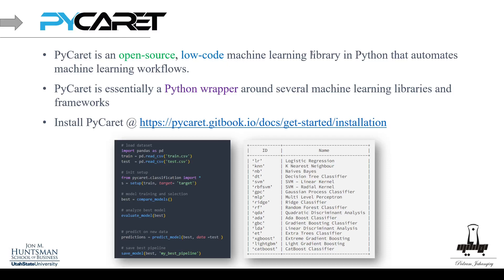PyCaret is an open source, low-code machine learning library — low-code meaning this is maybe 10 lines of code from A to Z. It's a Python library that automates your machine learning workflow. PyCaret is essentially a Python wrapper around several machine learning libraries, including scikit-learn, sktime for time series regression, visualization libraries like Yellowbrick, and lots of other packages.